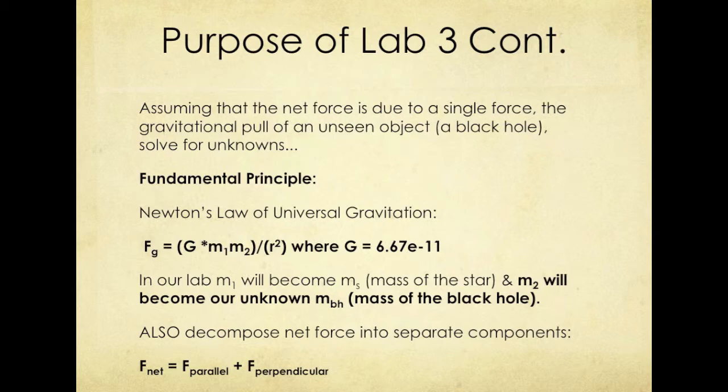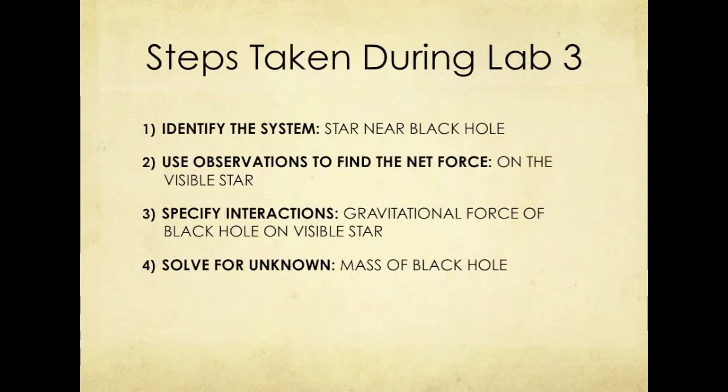M1 will be the mass of the star and M2 will be the mass of the black hole. During this lab, we will also learn how to decompose the net force into its separate components, a parallel force and a perpendicular force component. The parallel force determines speeding up and slowing down and will always run parallel with the velocity and motion of the object, while the perpendicular expresses a change in direction and will run inwards towards the center of the kissing circles. Steps for the lab are as follows. We will first identify the system, which is a star near the black hole.